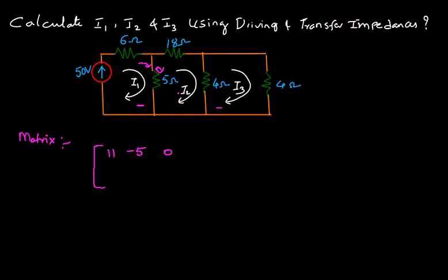For the second loop: the common resistance between the second and first loops is minus 5, since the currents flow in opposite directions. For the second loop alone, you add all three resistors: 18 plus 4 plus 5, which is 27. The common resistance between the second and third loops is 4, but the currents are in opposite directions, so you write minus 4.